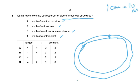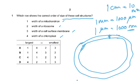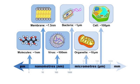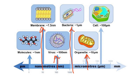One centimeter equals 10 millimeters; one millimeter equals 1000 micrometers; one micrometer equals 1000 nanometers. So nanometer is the smallest unit. You have to know the sizes of all these structures. In the diagram you can see: the cell membrane, then the virus, then a bacterium at around one micrometer, then an organelle like the mitochondrion, and then the eukaryotic cell at 100 micrometers. Please pause and study this.